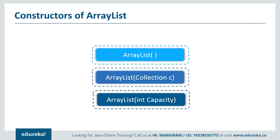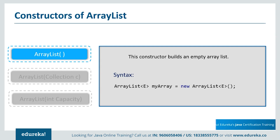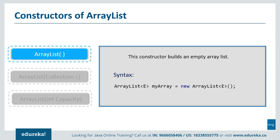Now let's see the various constructors supported by Java ArrayList. The first is ArrayList(), which builds an empty ArrayList. In terms of syntax, myArray is a reference to an ArrayList that holds references to objects of type E. The array has an initial capacity of 10 cells, although the capacity will be increased as needed as references are added to the list, and cells will contain references to objects of type E.